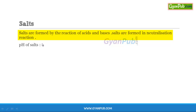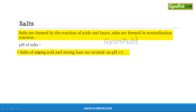The pH of these salts varies accordingly by the usage of strong acid and strong base, or strong acid and weak base, or weak acid and strong base, or weak acid and weak base in the formation of salts. If we use strong acid and strong base, then the salts are neutral and the pH is 7, as the formed salt has equal amounts of H+ and OH- ion concentration.